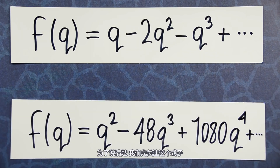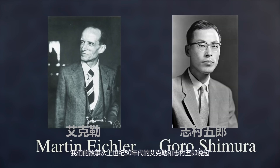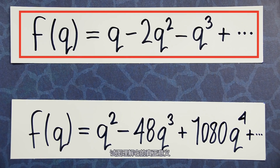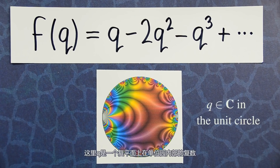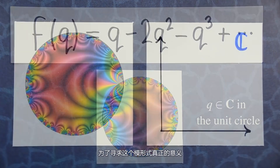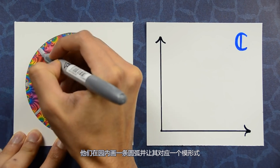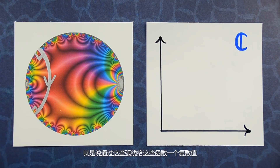For the sake of concreteness, I'll focus on this one here. Our story begins in the 1950s, with mathematicians Martin Eichler and Goro Shimura. They looked at the coefficients of this modular form and wanted to understand their true meaning. The first key step was to visualize this function in the complex plane, where the variable q is a complex number in the interior of the unit circle. To find the true meaning of the coefficients, they took a curved arc in the circle and integrated the modular form over that arc — that is, they added up the values of this function over the arc.